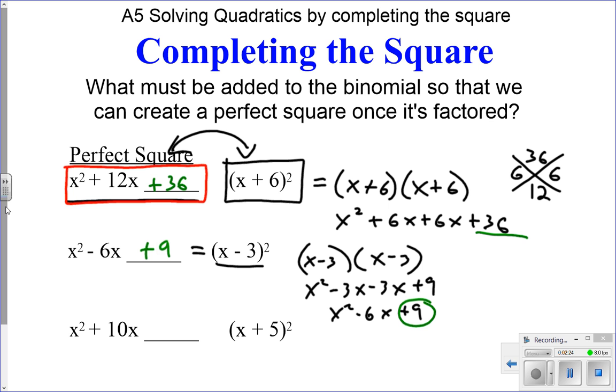Again, on this one here with x plus 5, we're going to have x plus 5 times x plus 5 is equal to x squared plus 5x plus 5x plus 25, which is going to be equal to x squared plus 10x plus 25. So I have to add 25 here.